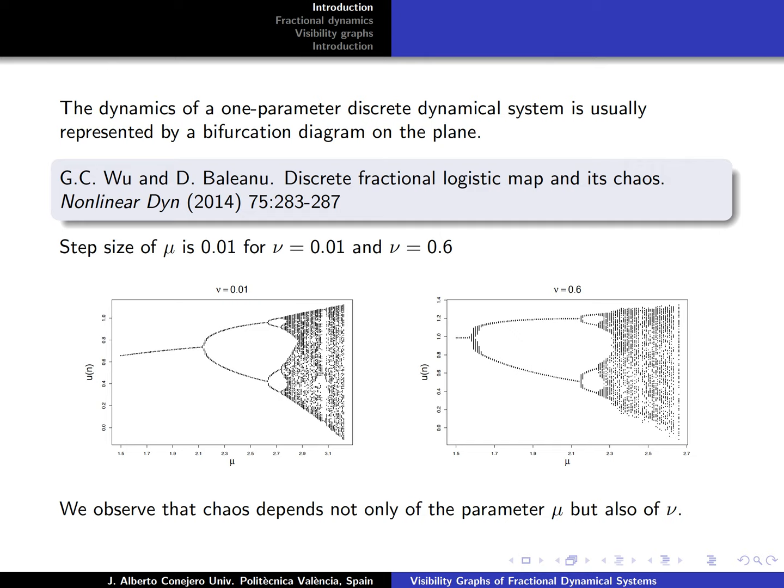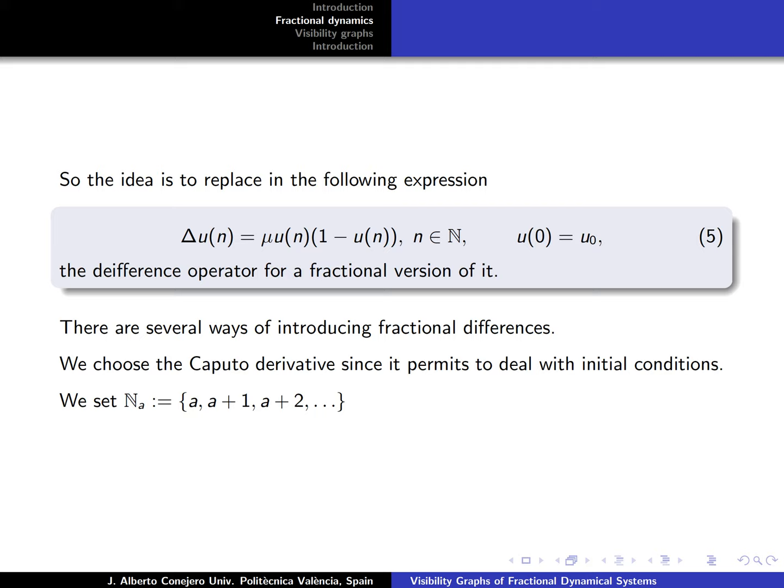We want to study more how is this dependence in terms of these two parameters and if there's somehow a connection between them. We recall that the idea is to replace in equation 5 and to put a fractional difference operation. There are several ways of introducing fractional differences. In our case we are going to choose the Caputo derivative since it permits us to deal with initial conditions, and the discrete set that we are going to consider are the natural numbers translated by a, denoted by ℕ_a.